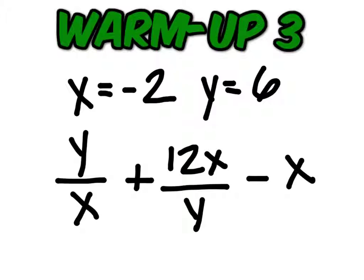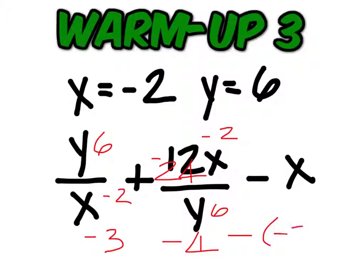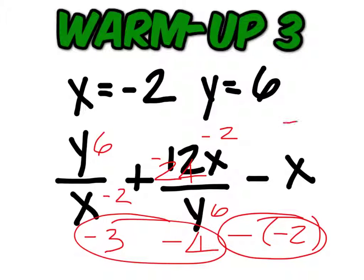Last one. So on this first part, you should have 6 divided by negative 2. Did you get a negative 3? And then 12 times a negative 2 divided by 6. So this up here should be a negative 24 divided by 6, which would be a negative 4. So at the end, we would have minus a negative 2. So this is negative 7 plus 2, which would be negative 5.